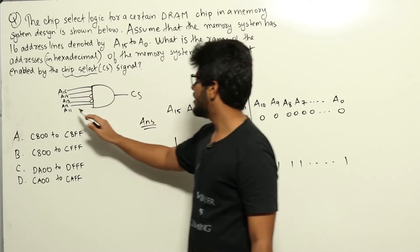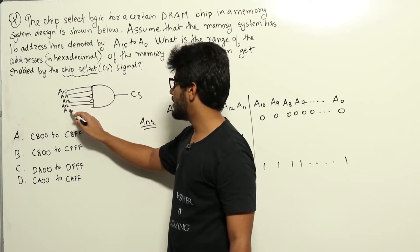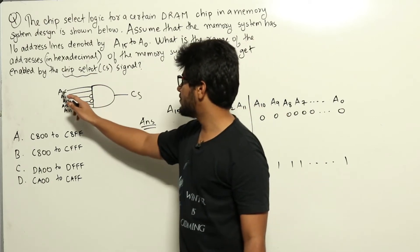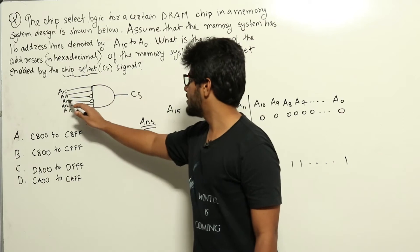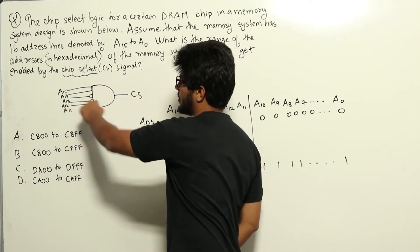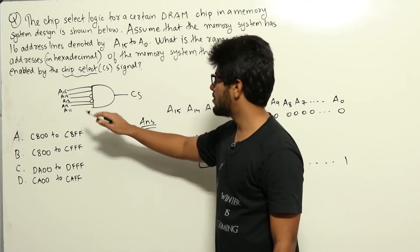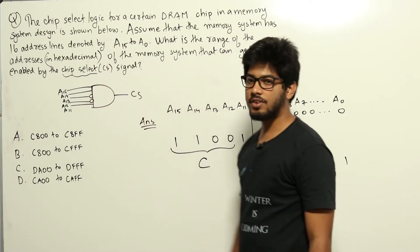If you look here, signals A15, A14, and A11 are being input in the true form to the AND gate, which means that A15, A14, and A11 should be 1. Also, A13 and A12 are being input in the complement form, which means that A13 and A12 should be 0, which will make the complement 1, and only then the input to the AND gate will be 1.